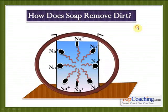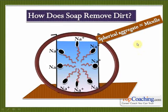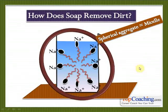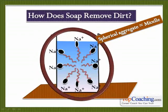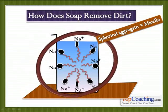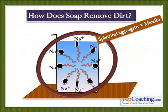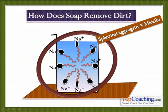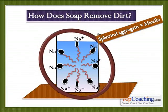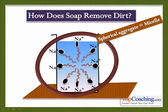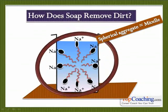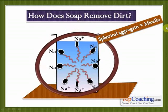So basically every soap molecule forms this sort of circular aggregate when soap is added to water. The red ends here are the hydrophobic ends — they repel water and attract oil. The black ends, which have the sodium ion, are hydrophilic ends — they attract water. This circular spherical aggregate of soap molecules is called a micelle. So soap forms micelles when it is added to water.